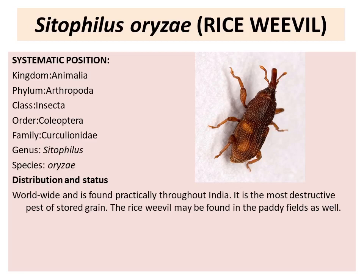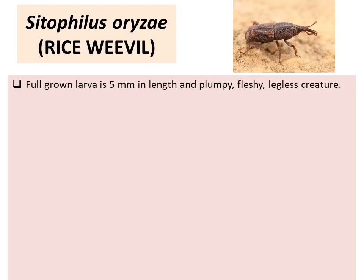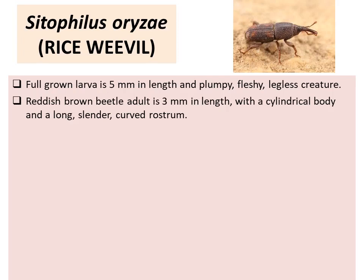It is the most destructive pest of stored grain. The rice weevil may also be found in paddy fields. Host range includes rice, sorghum, wheat, barley, and maize. The full-grown larva is 5 mm in length and plump, fleshy, and legless. The adult is a reddish-brown beetle, 3 mm in length, with a cylindrical body and long, curved rostrum — a very important identification feature of Sitophilus. The elytra bears 4 light reddish or yellowish spots.